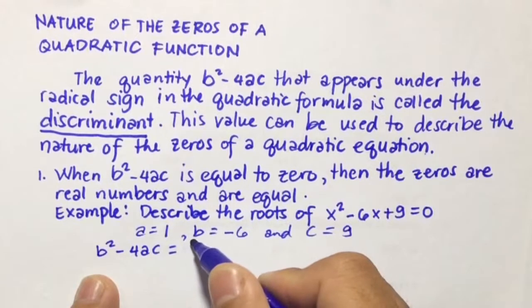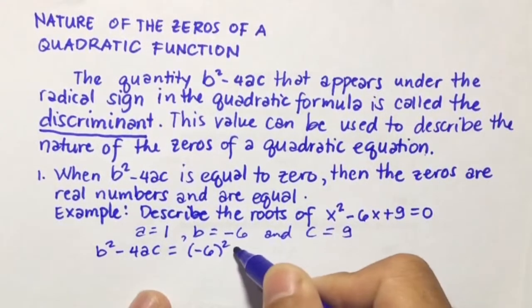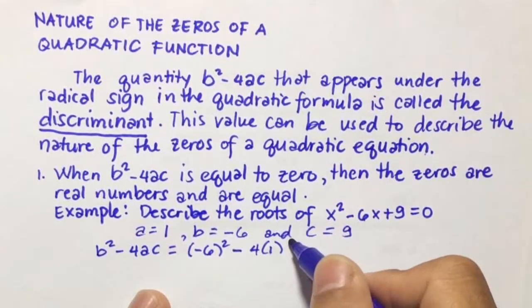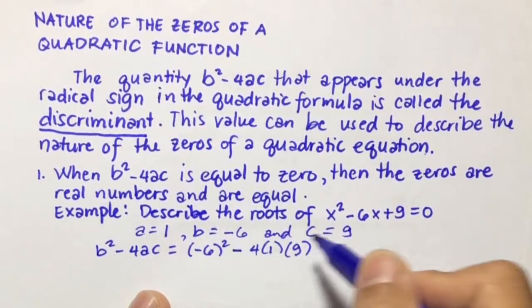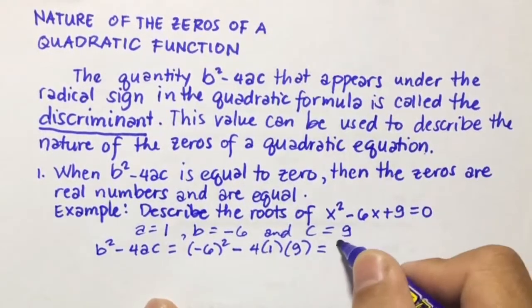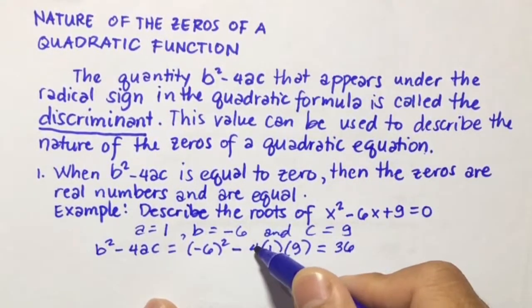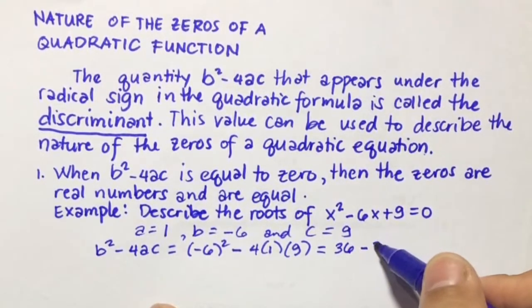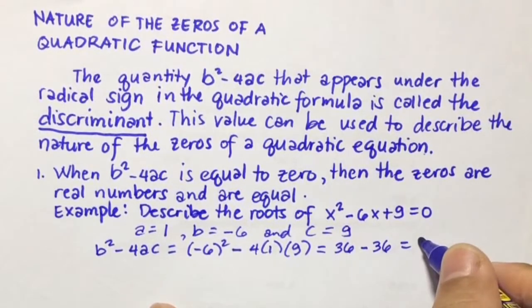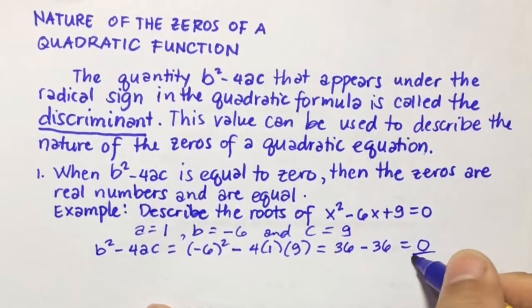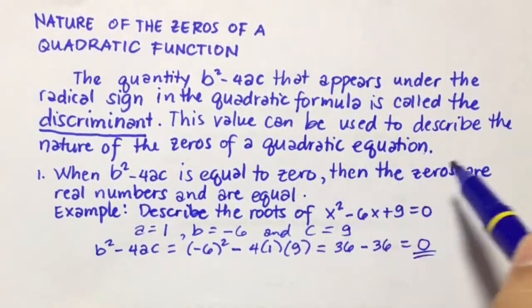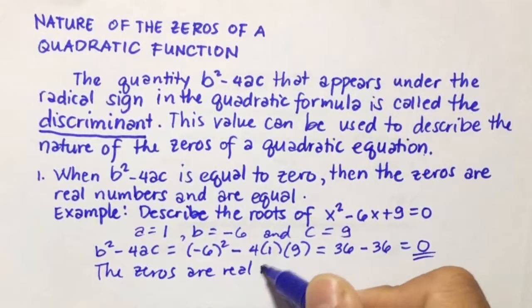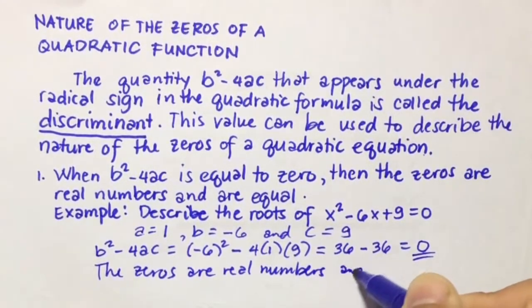So b squared: we have negative 6 squared minus 4 times a, which is 1, times c, which is 9. Negative 6 squared is 36, and 4 times 1 times 9 is also 36. So 36 minus 36 equals 0. The value of the discriminant is 0, which means the zeros are real numbers and are equal.